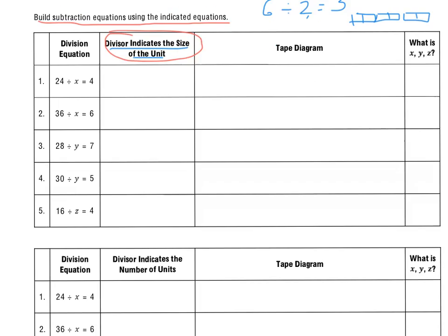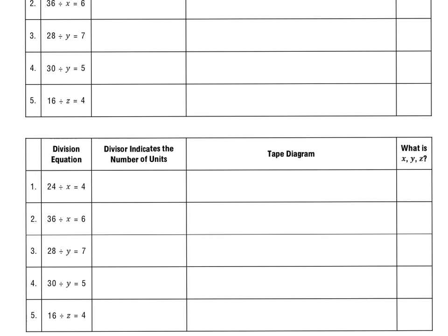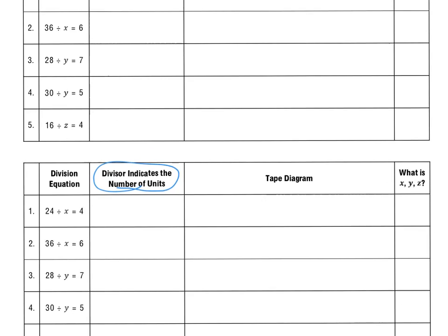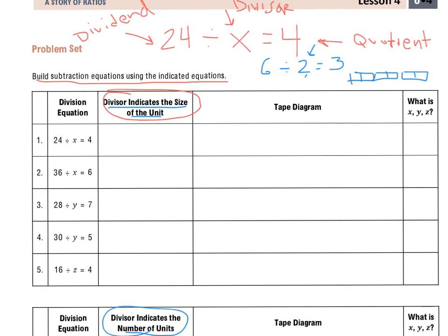Now, down below, it says divisor indicates the number of units. So if we're talking about the number of units, it really means the number of groups. So for that same question, 6 divided by 2,